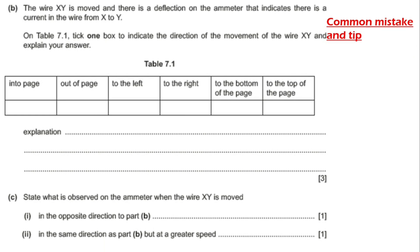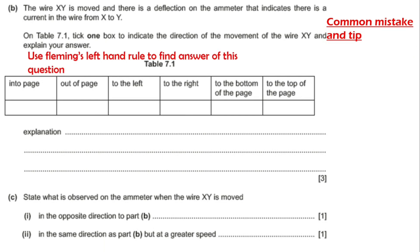On Table 7.1, tick one box to indicate the direction of movement of the wire XY and explain your answer. Here you have to use Fleming's left hand rule to find the answer. In my previous video I explained in detail how to use Fleming's left hand rule, and as per the rule the correct answer will be: to the bottom of the page.